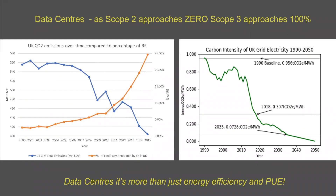One thing you need to be aware of is scope two — that's the carbon intensity of electricity. As that reduces to zero as we move into renewables, scope three emissions will start to move up to 100%.